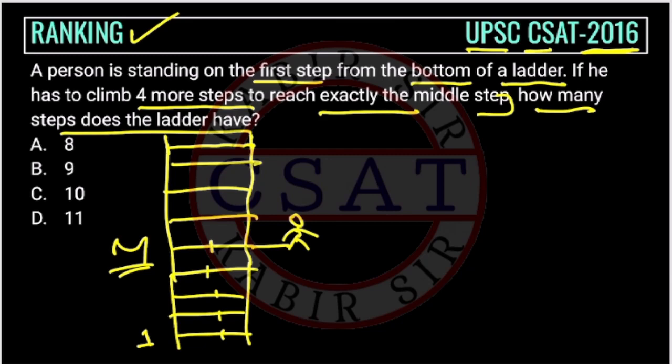How many steps does the ladder have? This step is 4 and this is 8, and there is 1. 4 plus 4 is 8, plus 1 is 9. So the answer is option B.